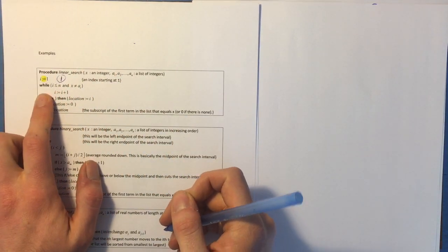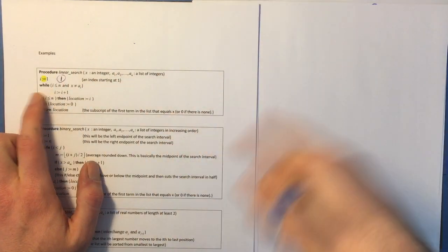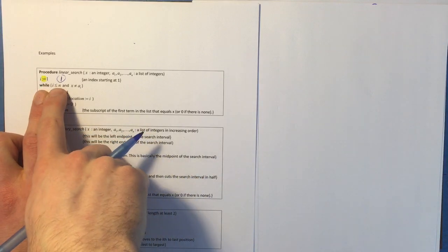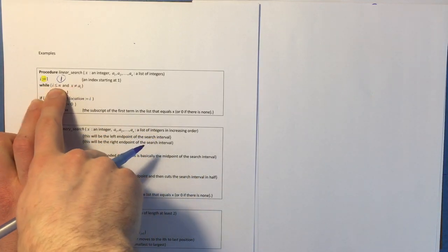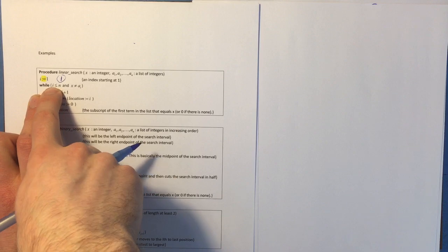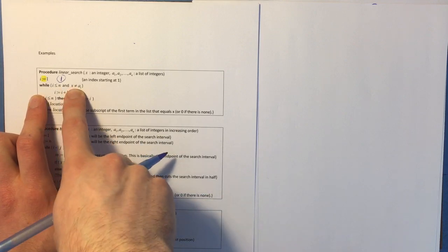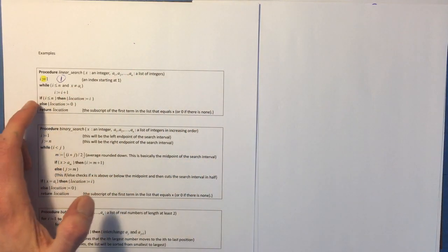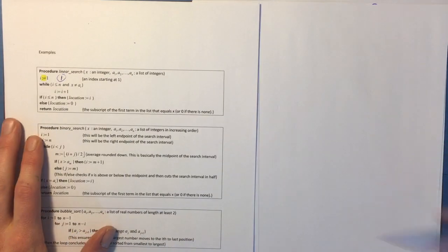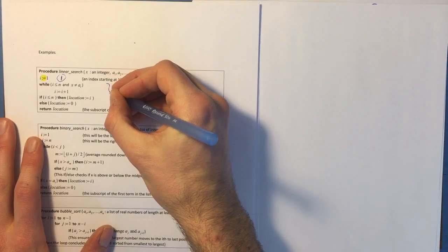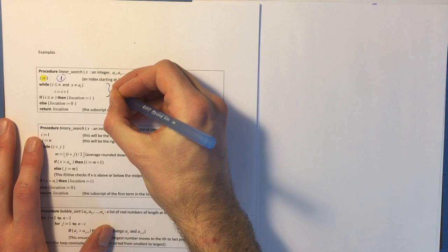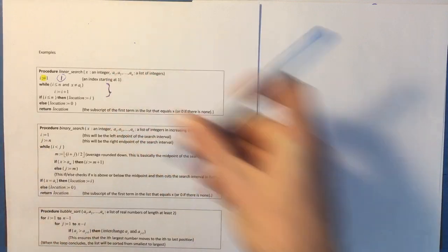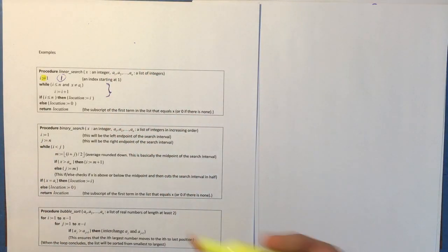Then we have this while loop. Now the while loop is going to run until one of these two things is false. Either i is greater than n or x equals a[i]. So every time the while loop runs, we're going to have some number of operations which are computed.